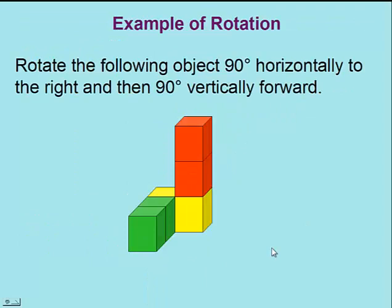Let's try an example. Let's take the following object, rotate it 90 degrees horizontally to the right, and then 90 degrees vertically forward.